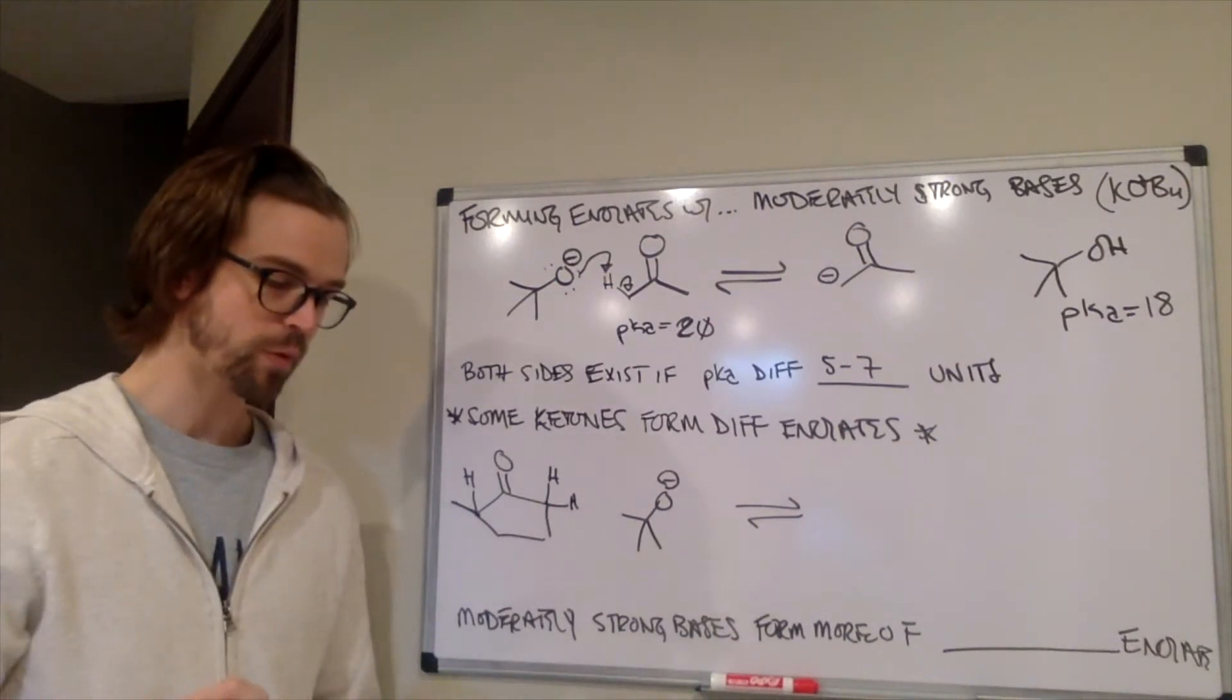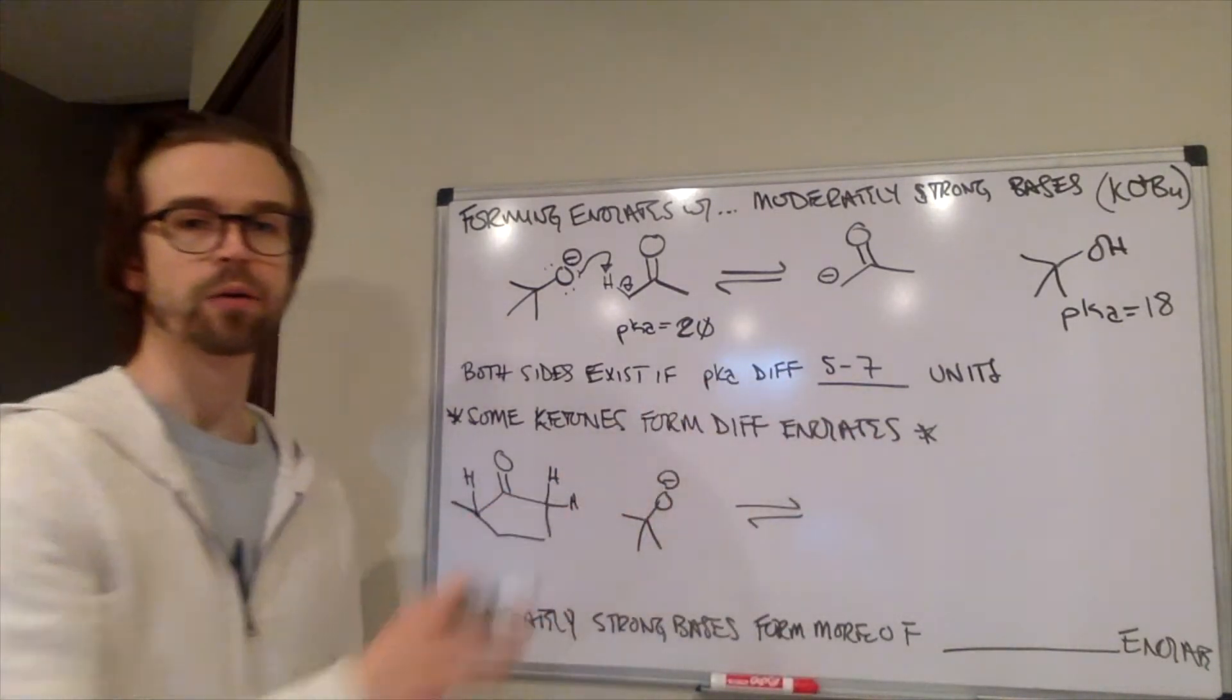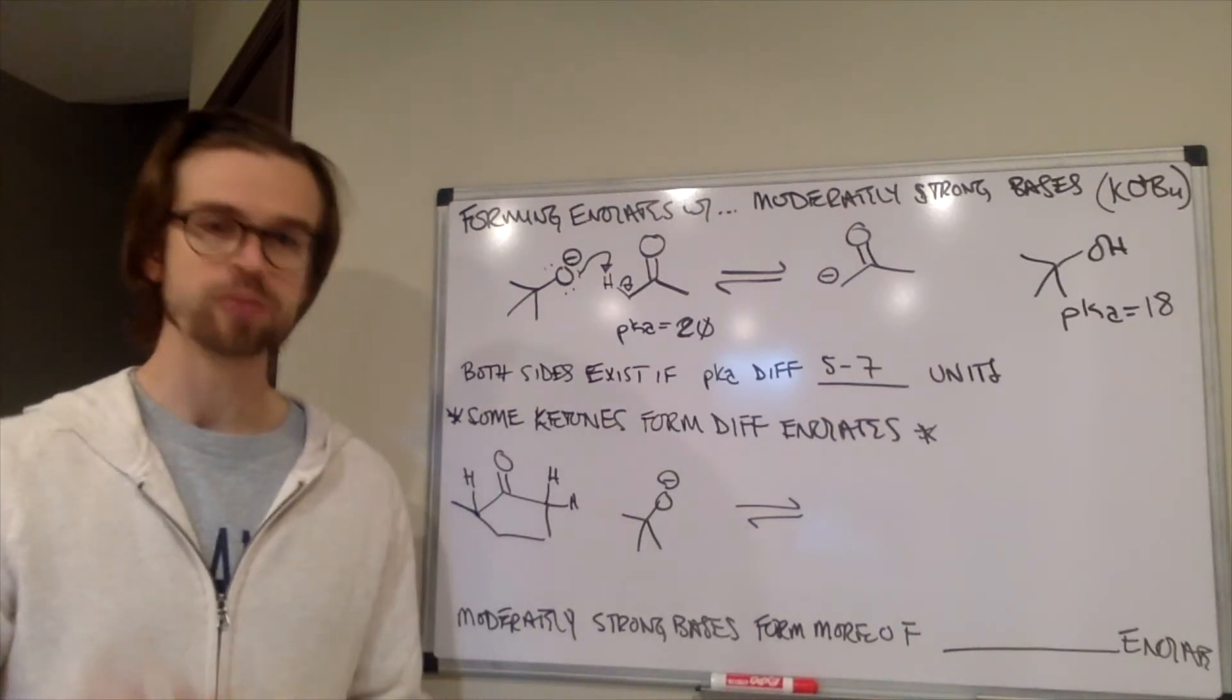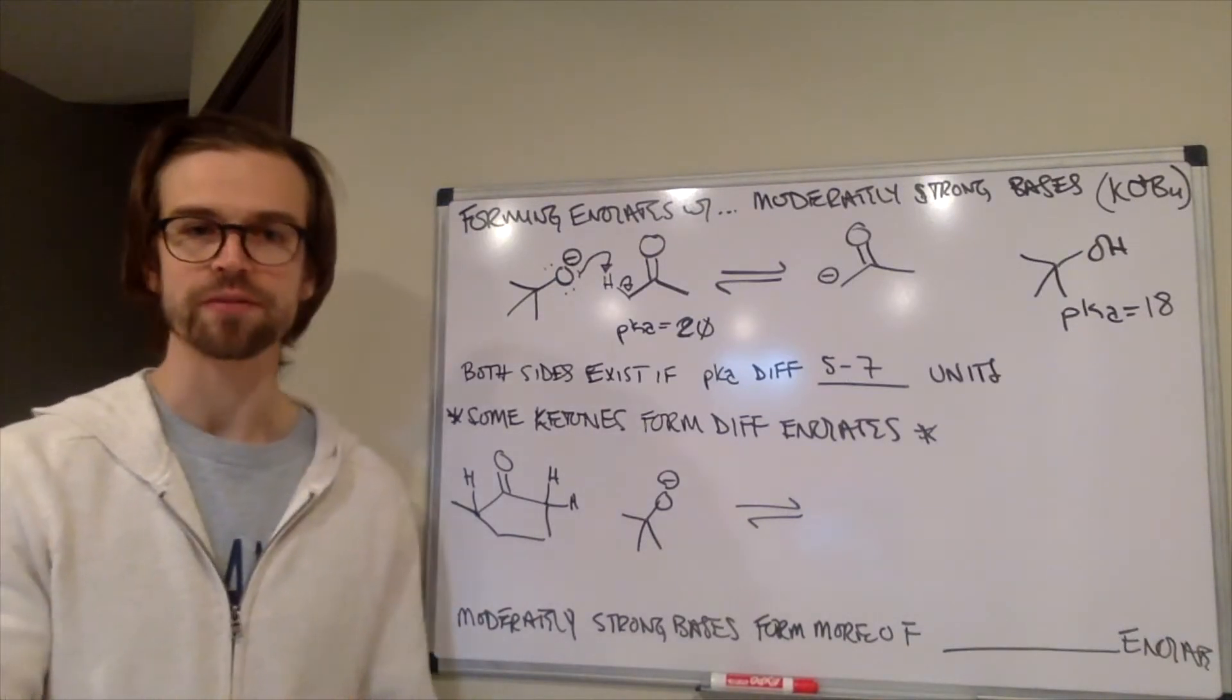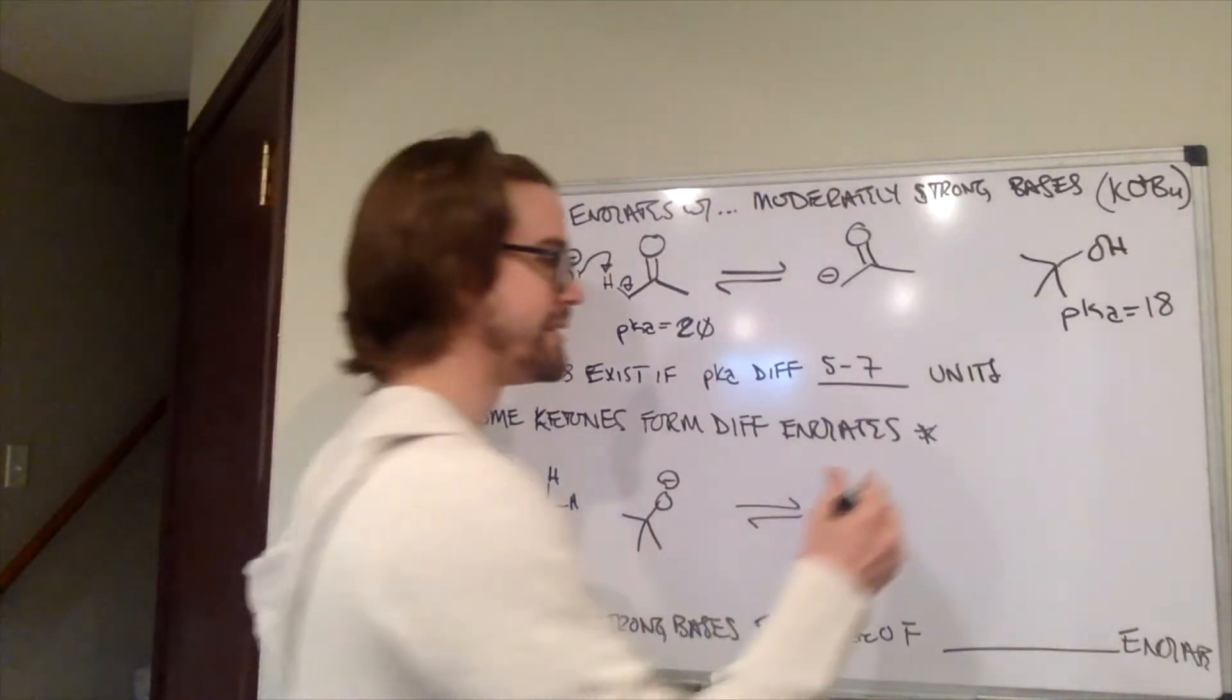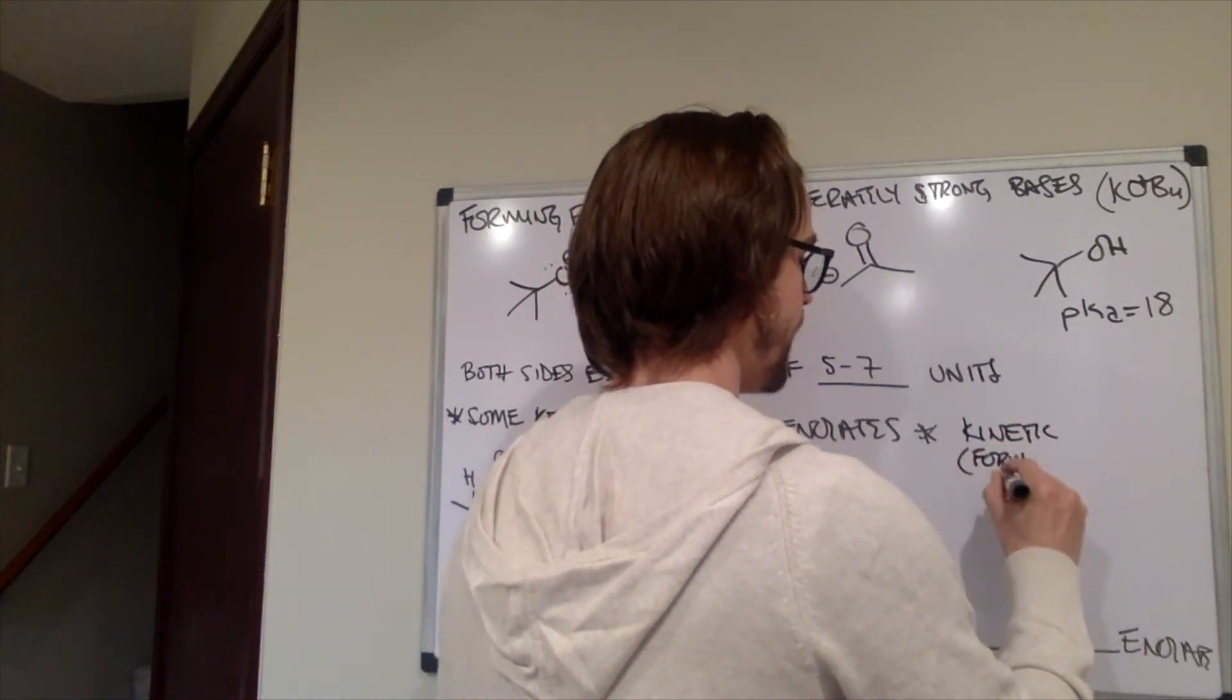And any time that we're working through an equilibrium, and it's able to go forward, backward, forward, backward, forward, backward, the equilibrium is going to settle into the most stable position. So, something that we're going to talk about right now is thermodynamic versus kinetic enolates. Kinetic enolates are the ones that form fastest.